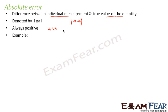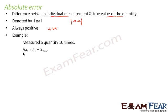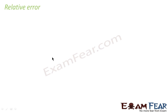Let us take an example. Suppose we have any quantity which we have measured 10 times. The absolute error involved in each measurement is the actual measurement minus the true value of the quantity. Similarly, the absolute error in the second measurement is the measured value minus the true value, and so on. That is absolute error.